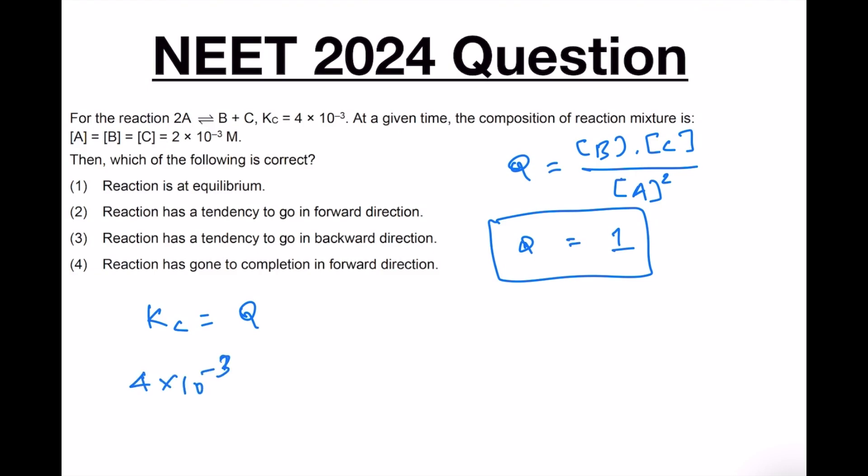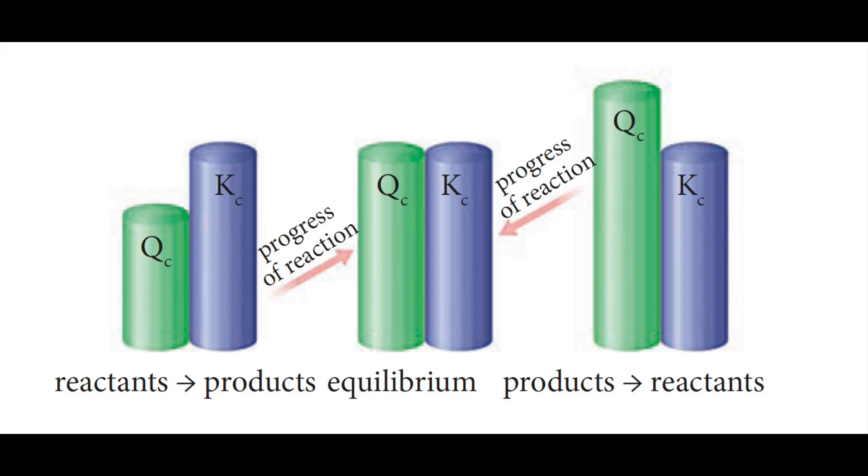The value of Q is 1, and therefore here Q is greater than Kc. This simply means that the reaction has to go in the reverse direction.